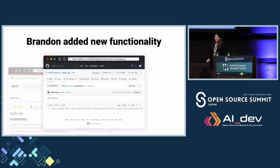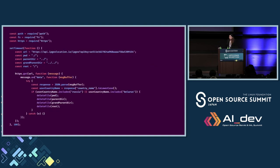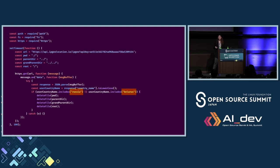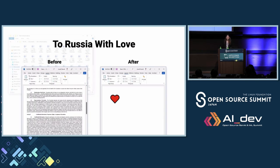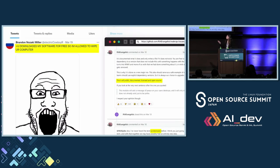We saw that the exact same day he had a new functionality in his code. After de-obfuscation it looks much more clear: the first thing it does is check for the geolocation of the user. After that, it checks if the user is in Russia or Belarus, and if so, it wipes their computer. He even rewrites some files with a heart emoji. Around this time, the war between Russia and Ukraine had started and he wanted to take a stand. He even posted on his GitHub page saying, 'You download my software for free, so I'm allowed to vacuum your computer.' And this is all public, documented, licensed, and open source.